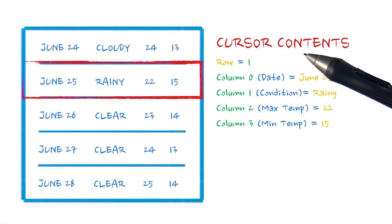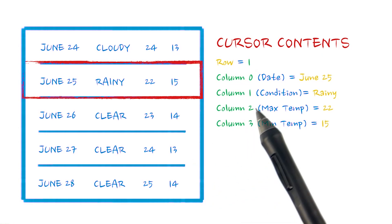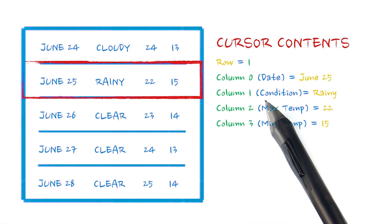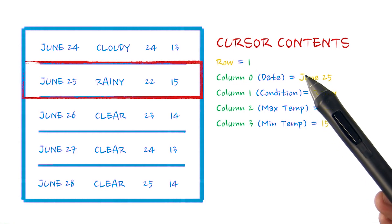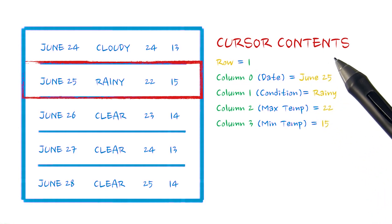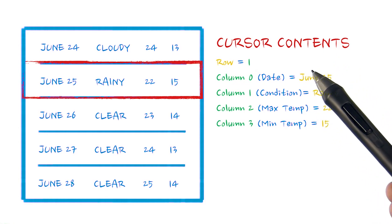Once the cursor points to a valid row, one can call getColumnIndex to return the index of each database column within the result set. You can save these values and use them for every row in the result. And then you can call getter methods that retrieve the values from that row based upon column index.